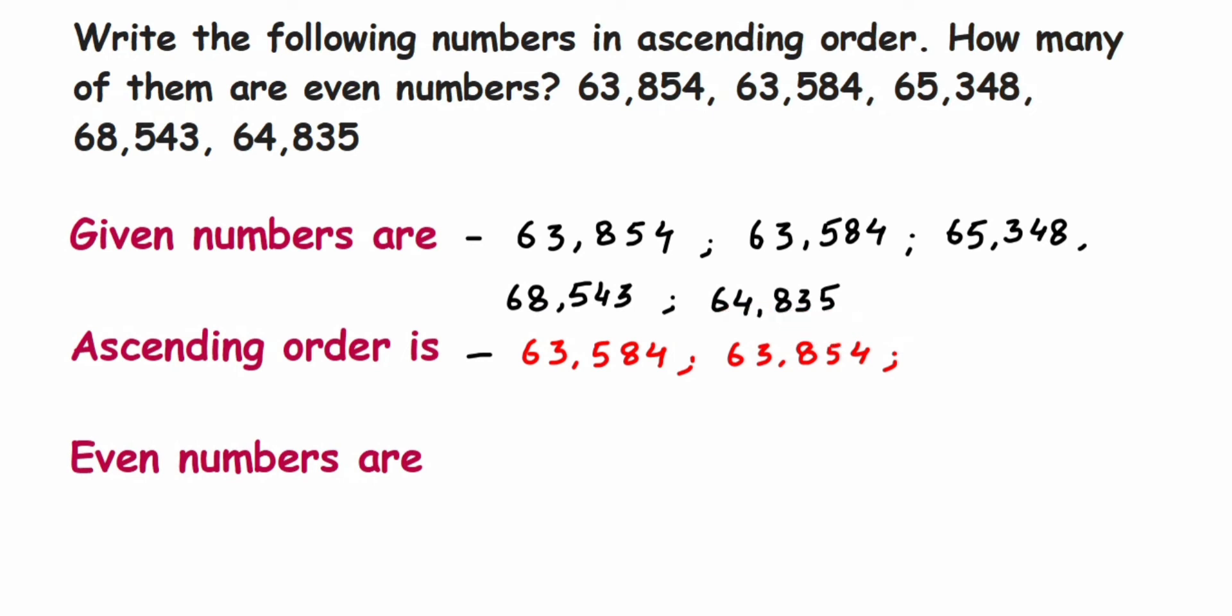We are done with these three numbers. We have two more numbers: one is 65 and one is 68. Since 65 is next, we're going to write down 65,348. The last number left is 68,543.